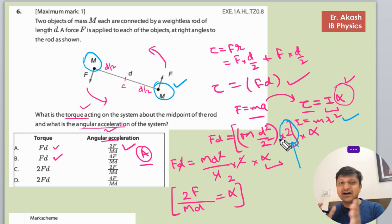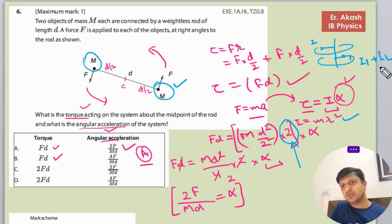Because in these questions you must have studied, like if this is 1, this is 2, and both are rotating like this, so I1 plus I2 will be like this. So the inertia will be added.